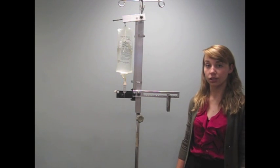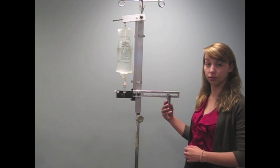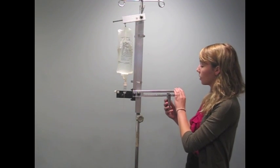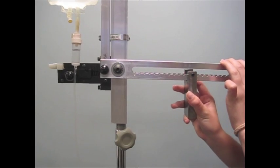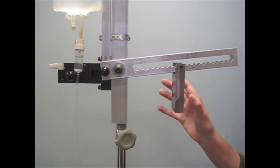And then, the clinician would move the counterweight one notch for each 50 milliliters of fluid she wishes to dispense. For instance, if you wanted to dispense 300 milliliters of fluid, you would move the counterweight inward six notches.